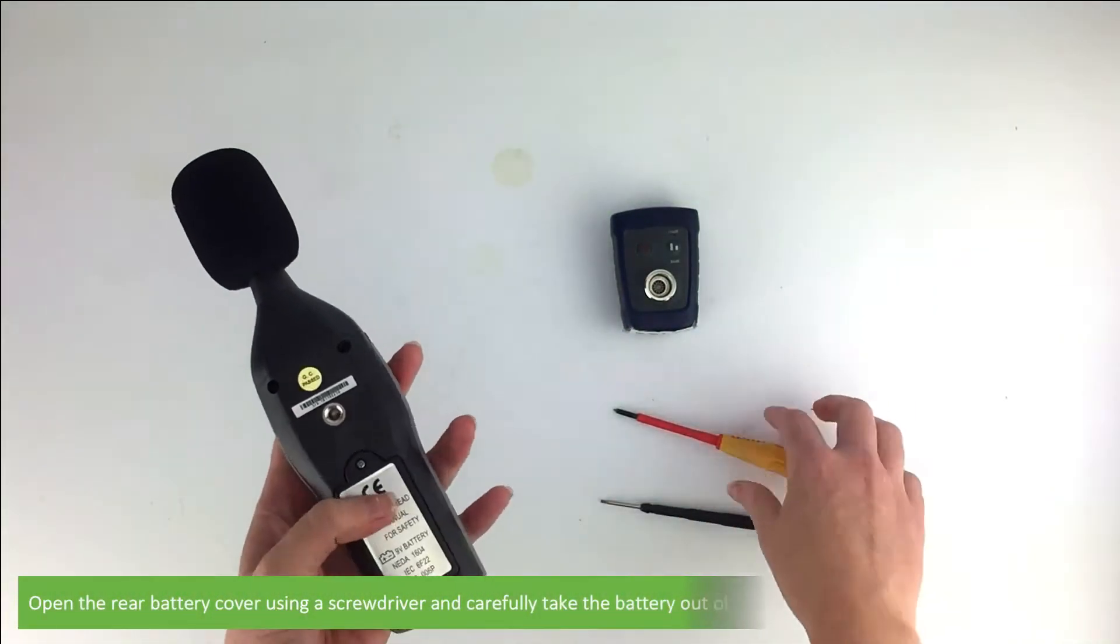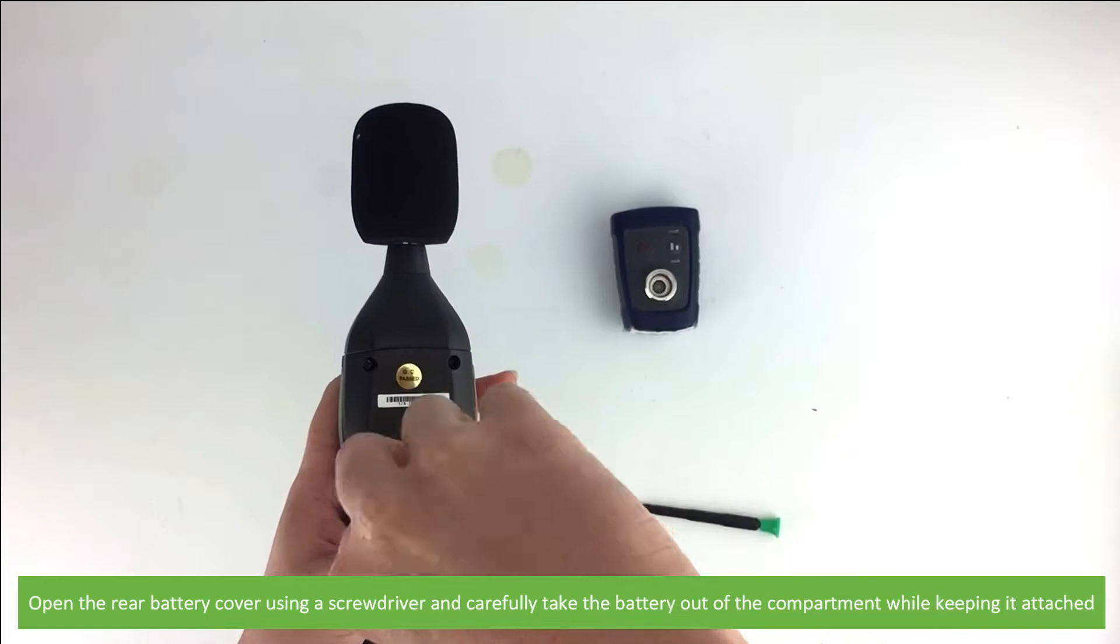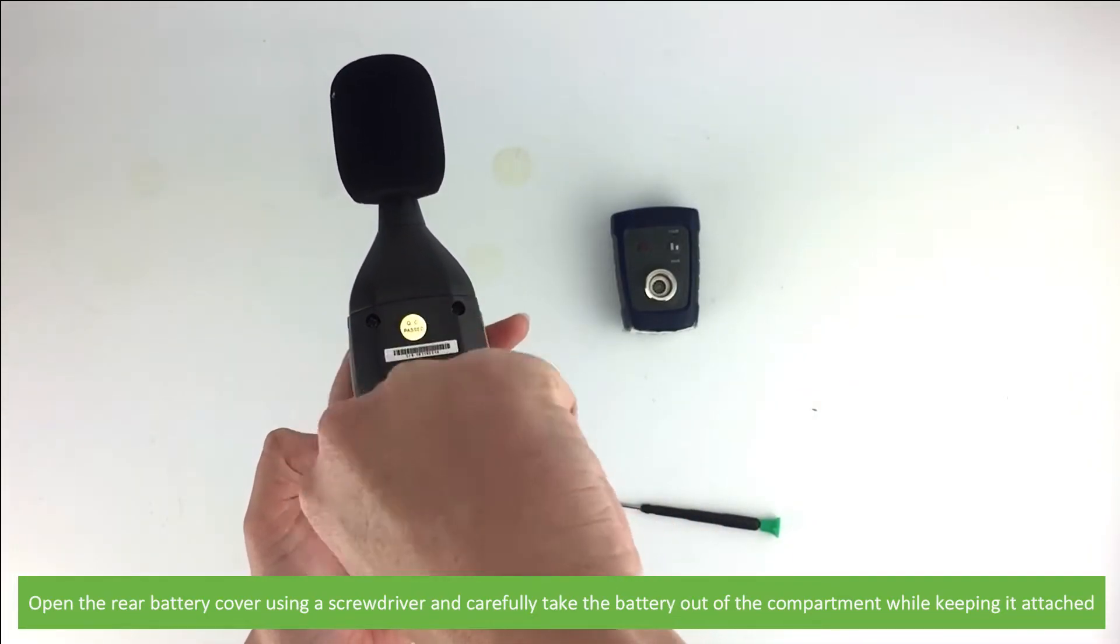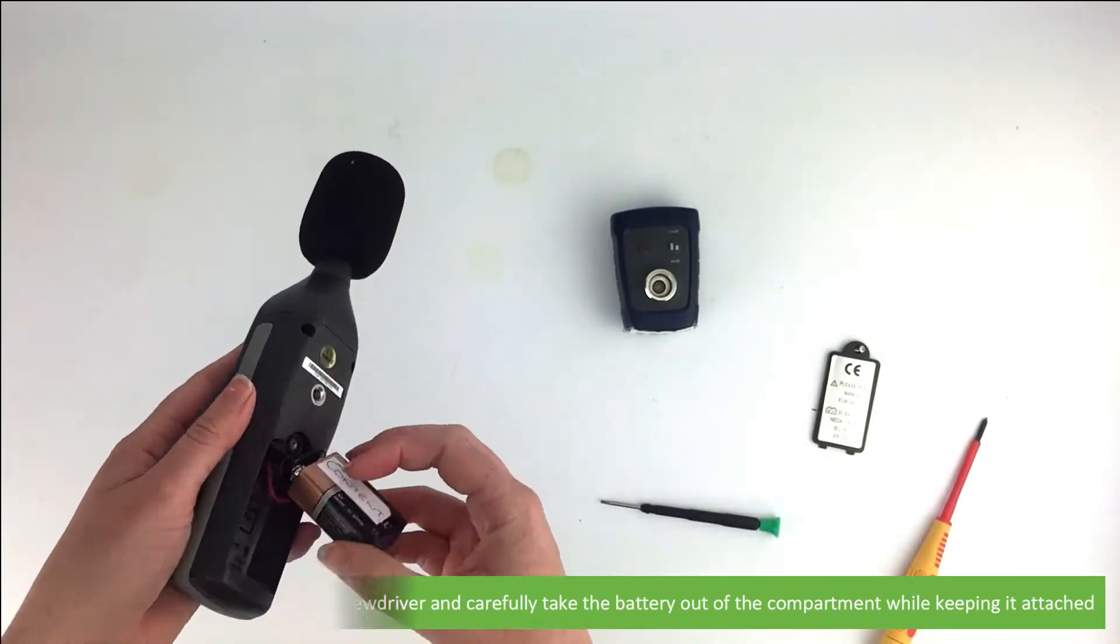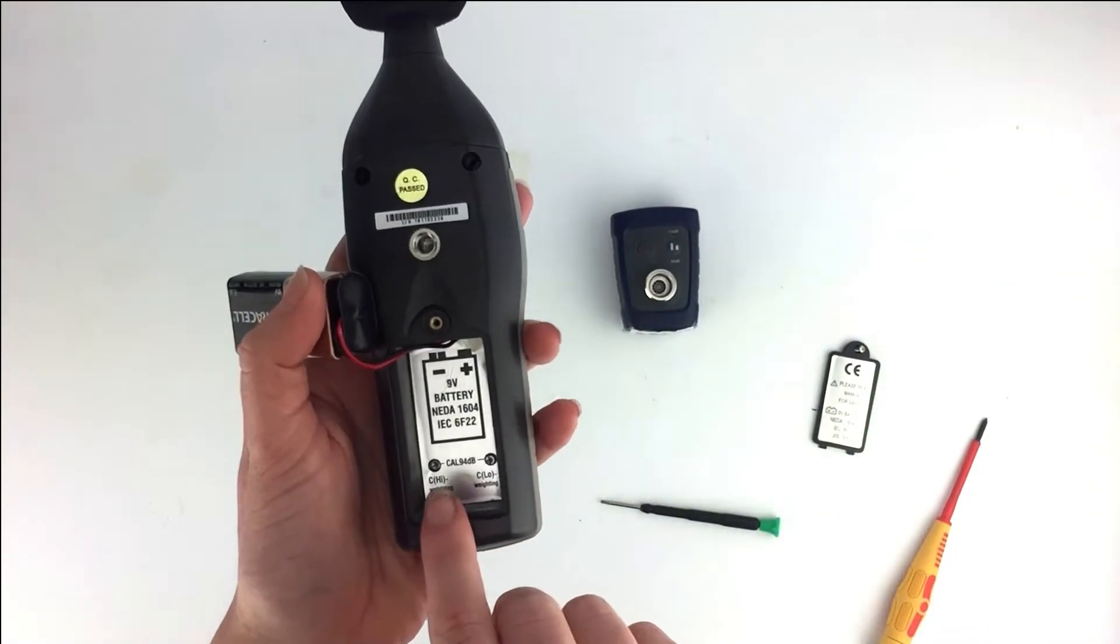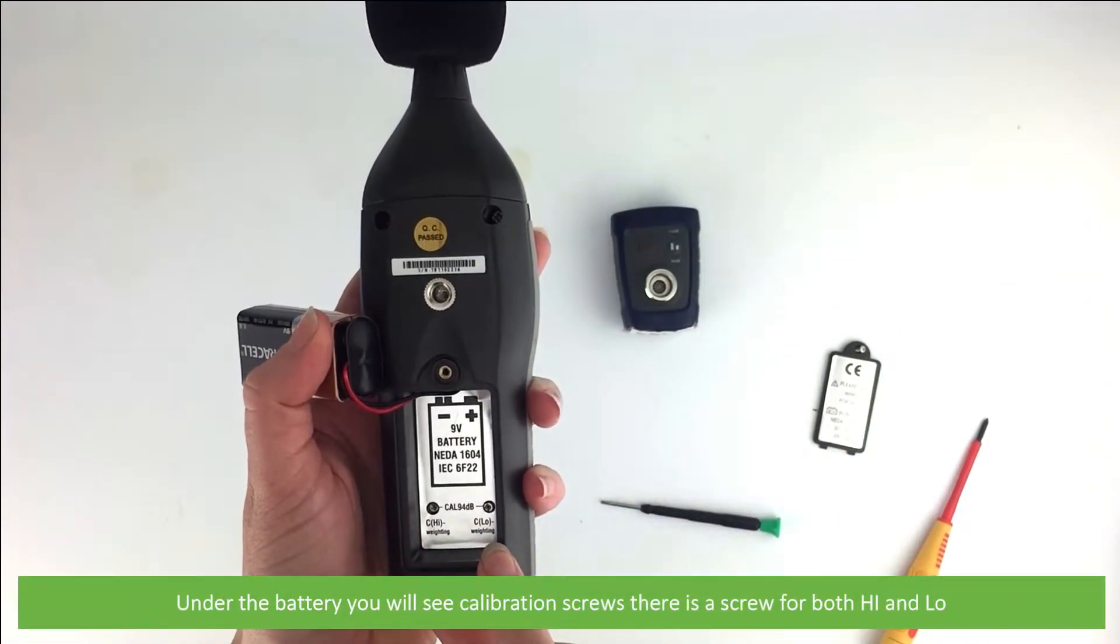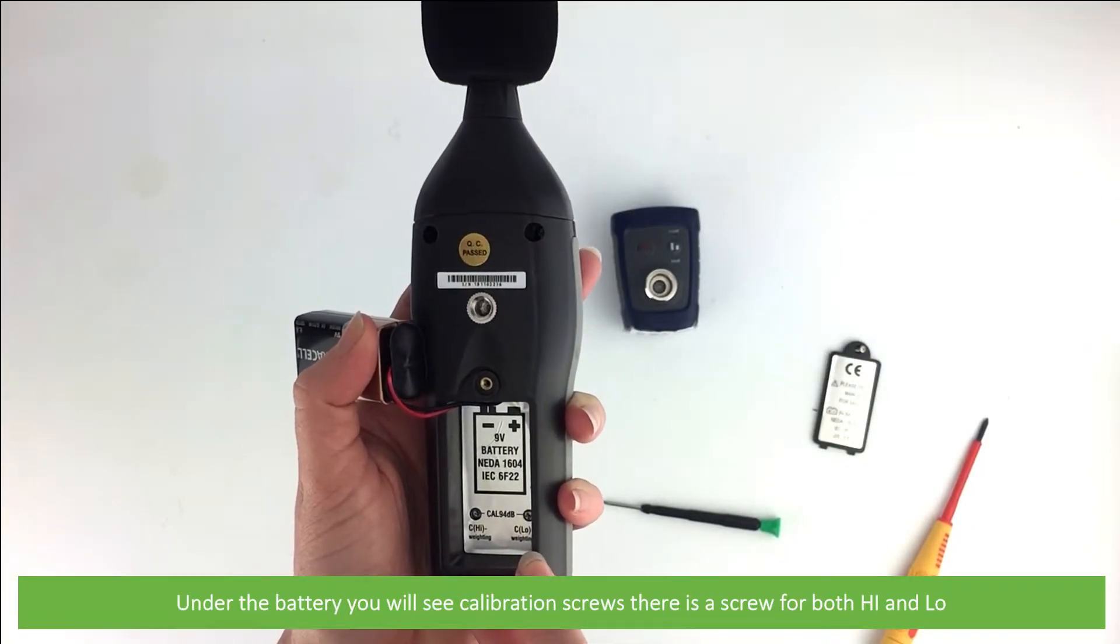Then open the rear battery cover using a screwdriver and carefully take the battery out of the compartment while keeping it attached. Under the battery you'll see calibration screws. There is a screw for high and a screw for low.